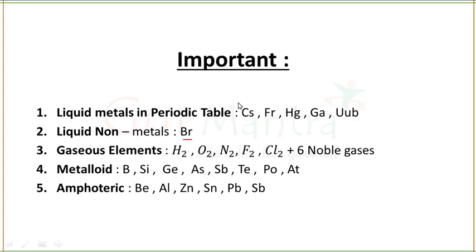We are talking about what properties each element shows and its own characteristics. Number 1: liquid metals in the periodic table are Cs, Fr, Hg, Ga, and UUB — you have to learn all the liquid metals. The liquid non-metal in the periodic table is bromine. Gaseous elements in the periodic table total 11: hydrogen, oxygen, nitrogen, fluorine, chlorine, and 6 noble gases — helium, neon, argon, krypton, xenon, and radon.